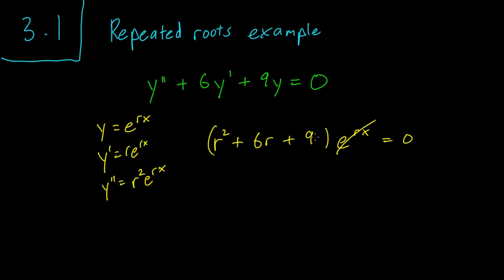So let's try the quadratic formula like we did in the past and see what happens. r equals minus b plus or minus square root of b squared minus 4ac over 2a. So we have minus 6 plus or minus square root of 36 minus 36, which is 0, over 2.